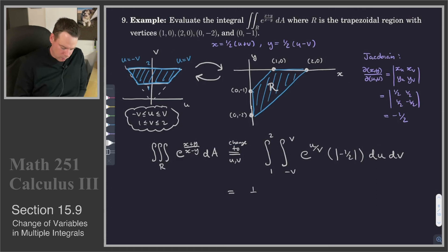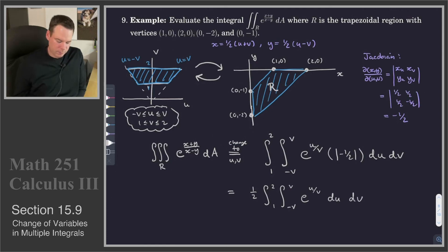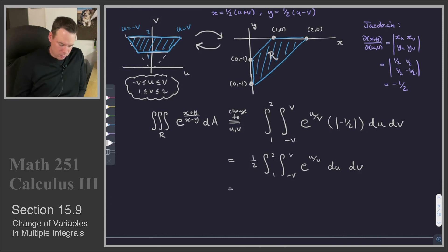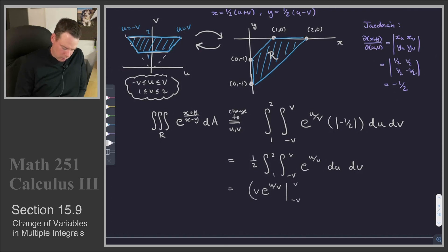So we have the integral from negative v to v of e to the u over v, dU dV. That integral is much simpler to deal with than the original. If I integrate with respect to u, that becomes e to the u over v with a v in front, and u goes from negative v to v. Then we're still left with the integral on the outside from 1 to 2, dV.